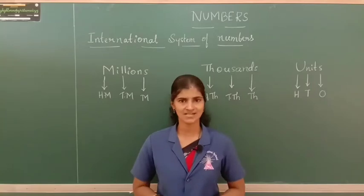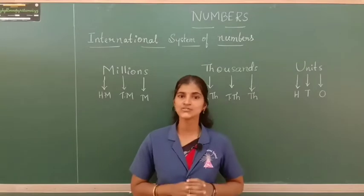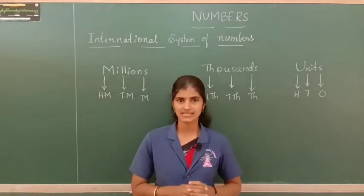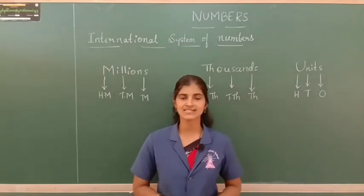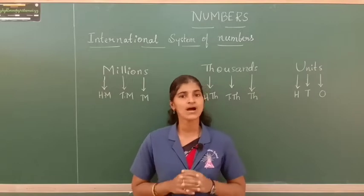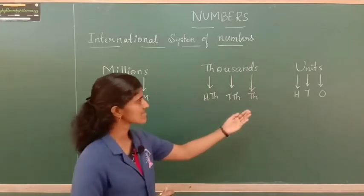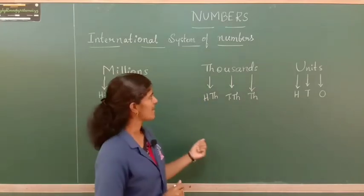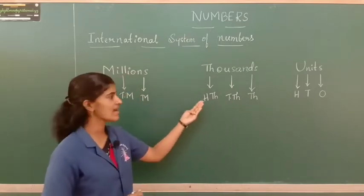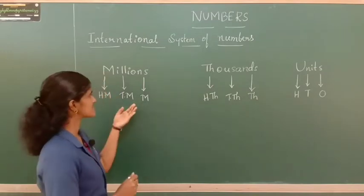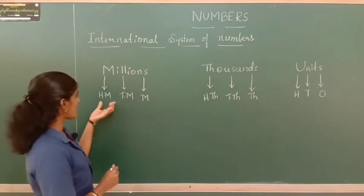In the international system of numbers, we are also going to make groups called periods, starting from the units place. The groups are: the units group, then the thousands, then the millions — that is one new word added, millions. Under the units group we have ones, tens, and hundreds. Under thousands we have thousand, ten thousand, and hundred thousand. Under millions we have millions, ten million, and hundred million.